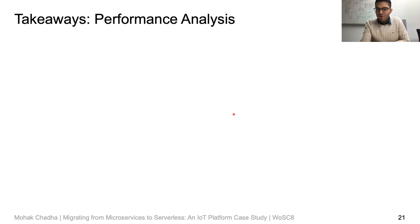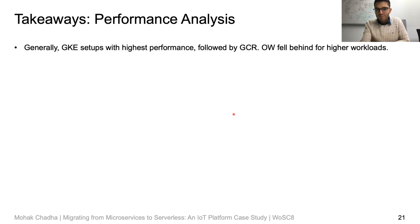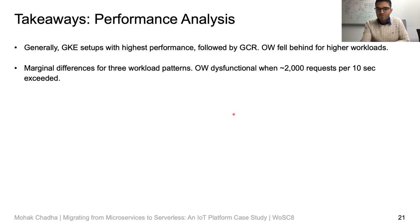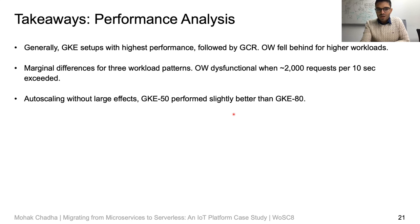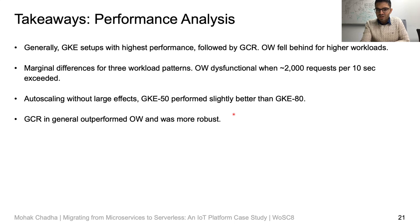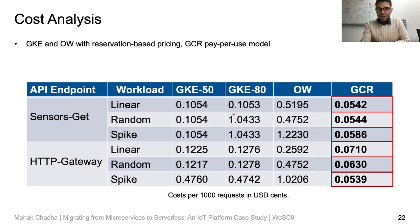The main takeaways from our performance analysis are: GKE performed best with the highest performance, followed by GCR and then OpenWhisk. For the different load patterns, we observed marginal differences. OpenWhisk performance was significantly worse for more than 2000 requests per second. GKE 50 performed slightly better than GKE 80. GCR overall was more robust than OpenWhisk, primarily because it is a managed service. We also compared the cost for different API endpoints across deployment strategies, and from our experiments we observed that per thousand requests, GCR was always cheaper.